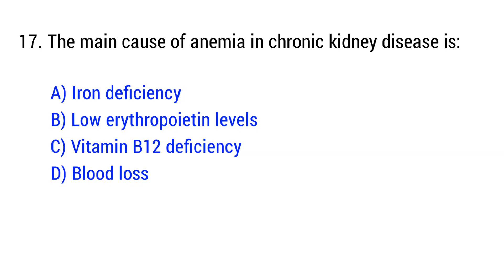Question number 17. The main cause of anemia in chronic kidney disease is? The right answer is option B: Low erythropoietin levels.